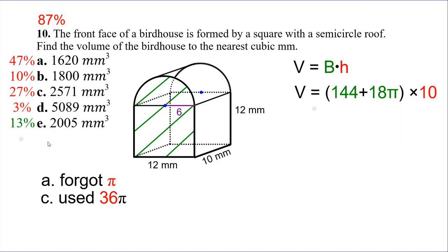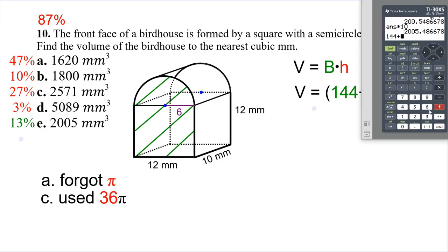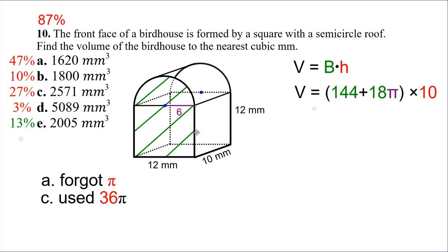Only 13% of you guys got that right, so that's pretty bad. There were a lot of issues on this one. The most common mistake was leaving off the pi — not actually multiplying pi in. Or using 36 pi instead of 18 pi, forgetting to divide by two, which gives you the answer for C. For answer A, you did 144 plus 18 without the pi and multiplied by ten. Remember we need to put the pi in there, and we can't just add it at the end because there wasn't a pi in both terms. We're dealing with these hybrid shapes — a cross between circle and non-circle shapes — like when we took a circular hole out of a rectangular side.